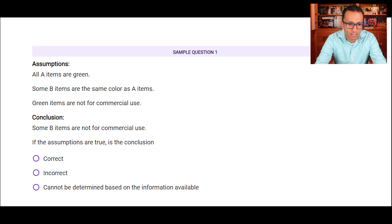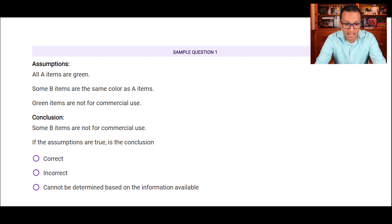Sample question one is a logical reasoning question. All A items are green. Some B items are the same color as A items. Green items are not for commercial use. The conclusion is: some B items are not for commercial use — is this correct, incorrect, or cannot be determined? Since the conclusion uses 'some' and not 'all,' it leaves room that some B items may be okay for commercial use. Some B items are green, and green items are not for commercial use, so the statement is correct. The tip: if you see the word 'some' in both the assumption and conclusion, there's a good chance the answer is correct.